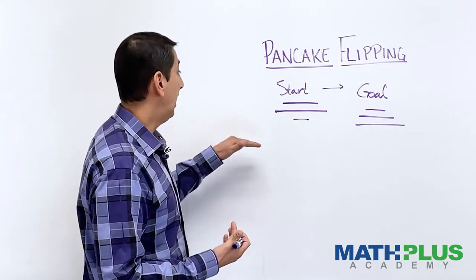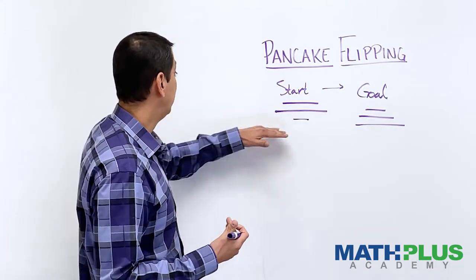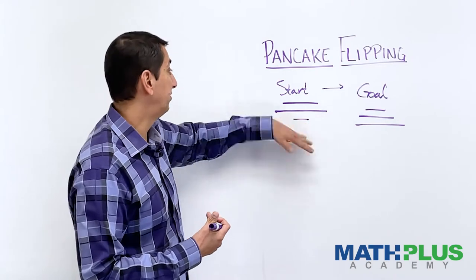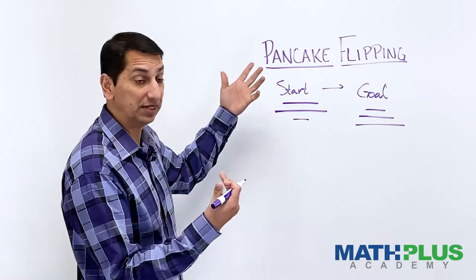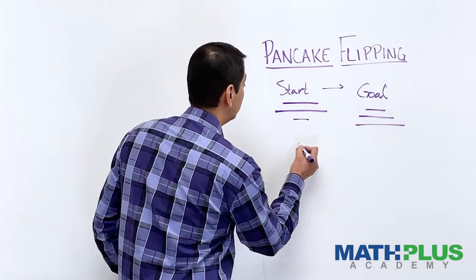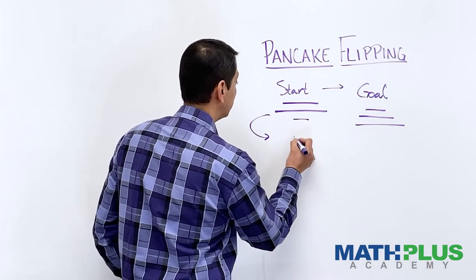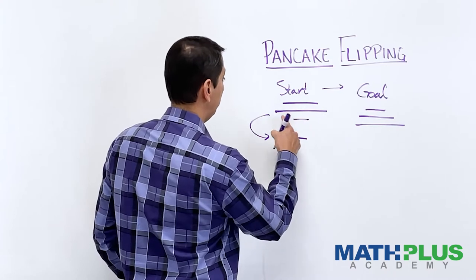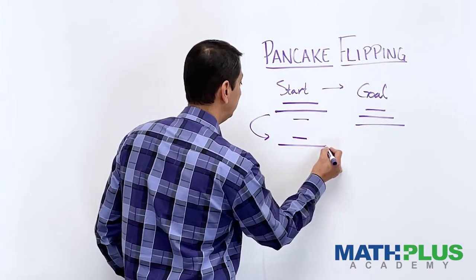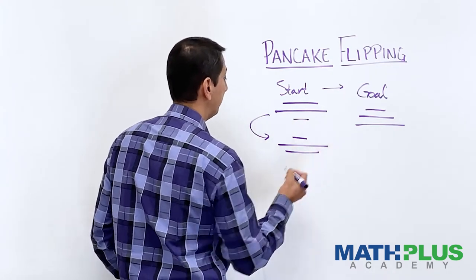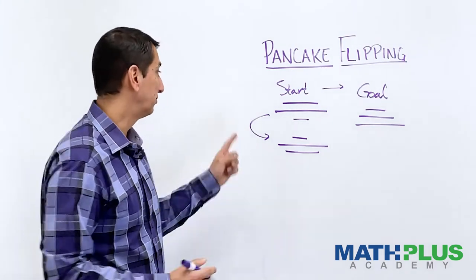So maybe I start by putting it at the bottom and flipping the whole stack. That would get the small one to the top, so maybe that's good. So if I did that, then I would end up with small on the top, big in the middle, and medium on the bottom. So that's my second, that's after one flip.